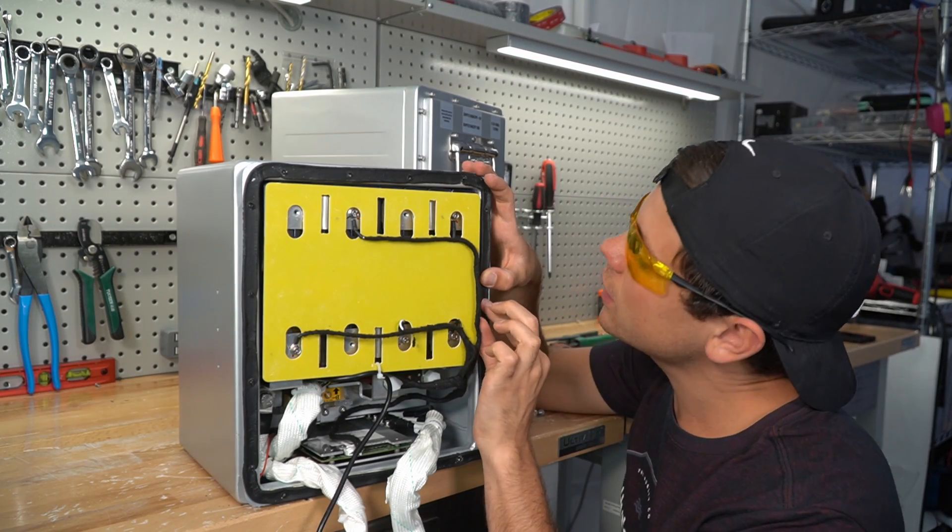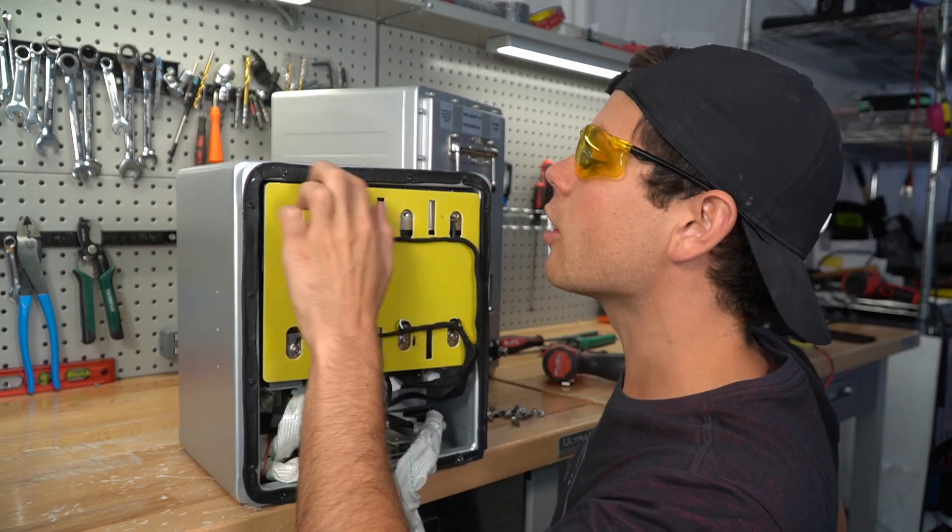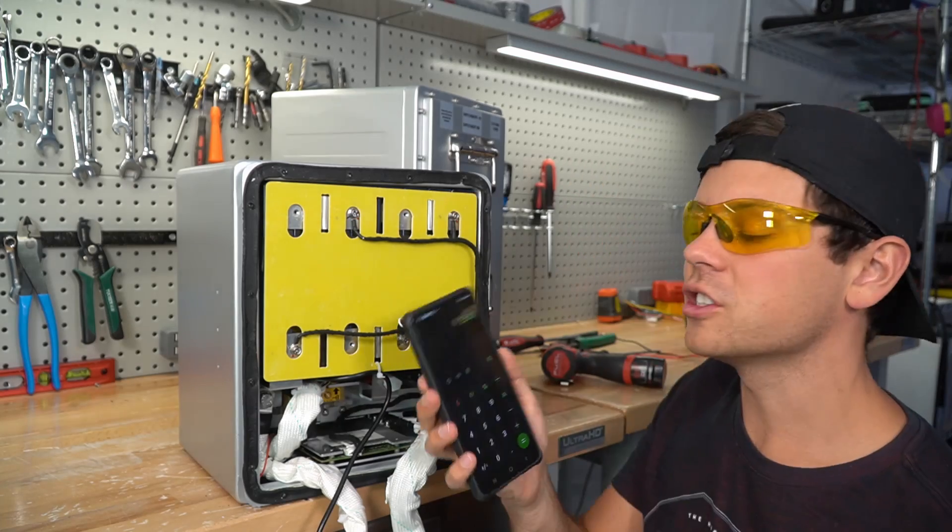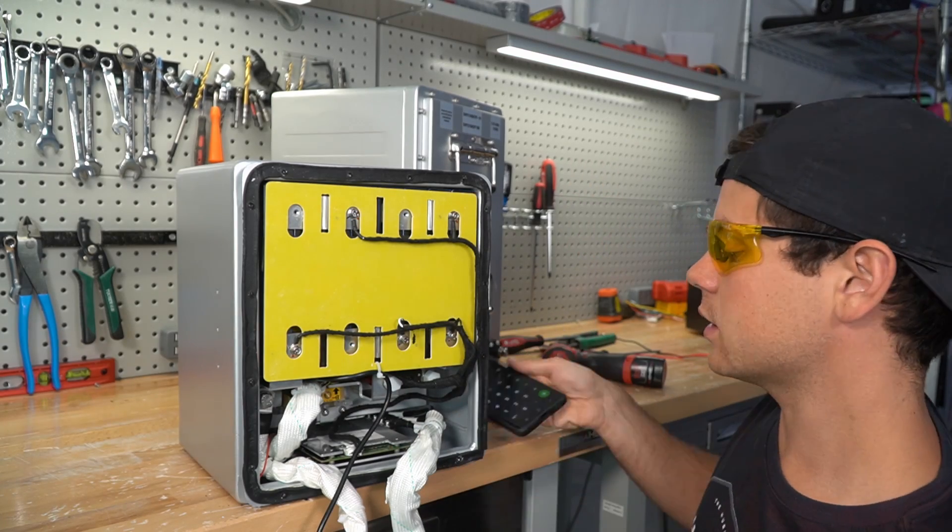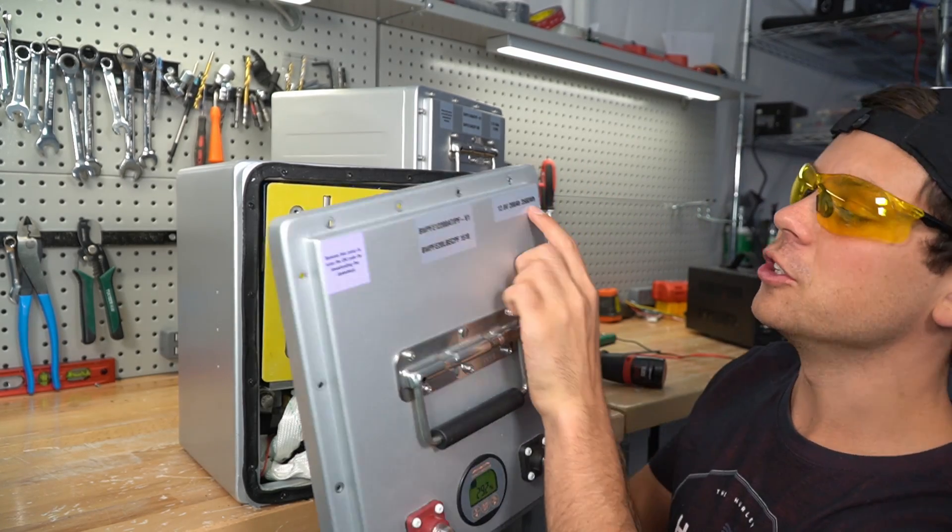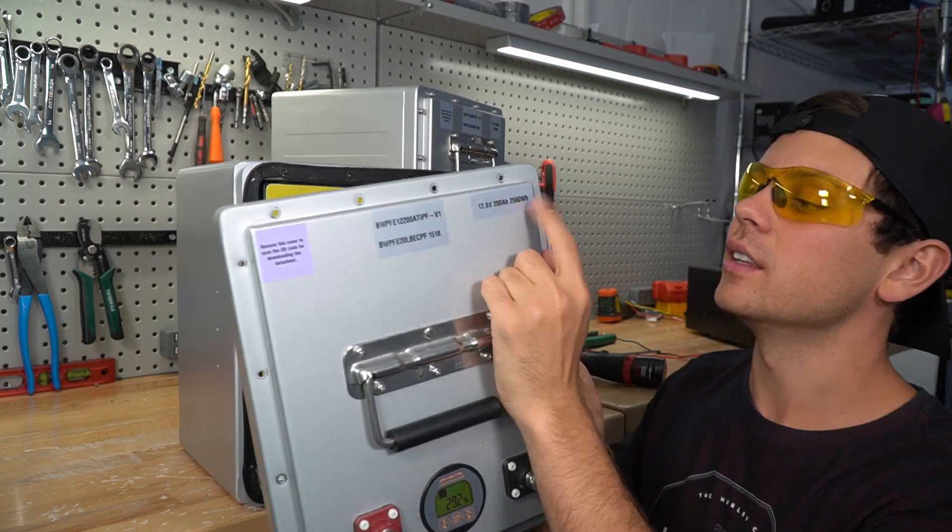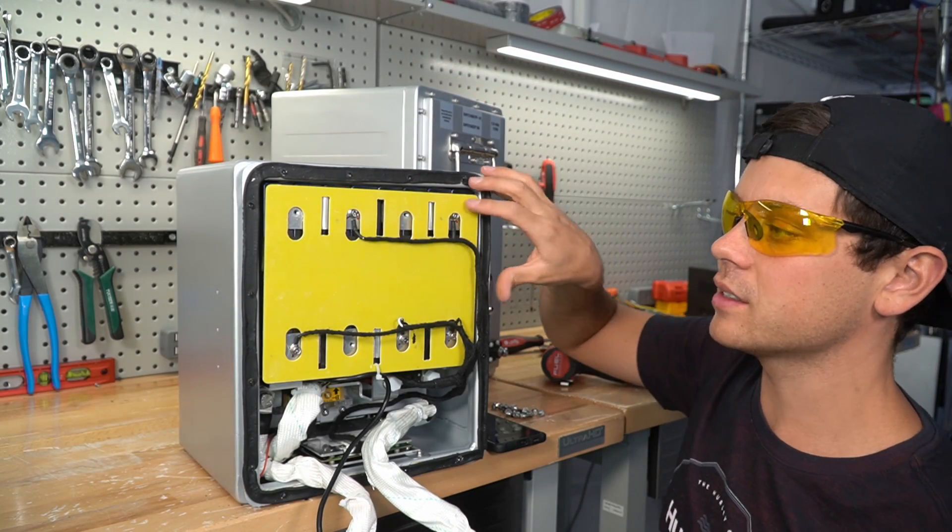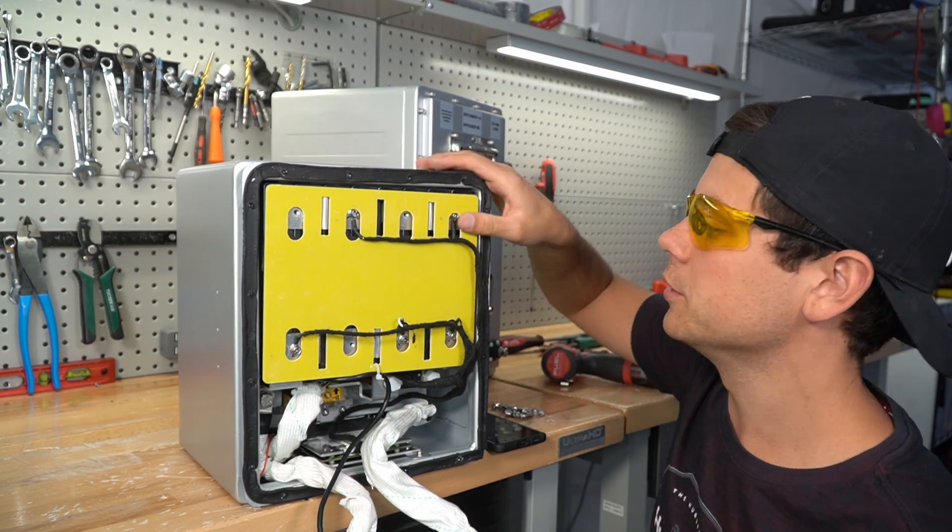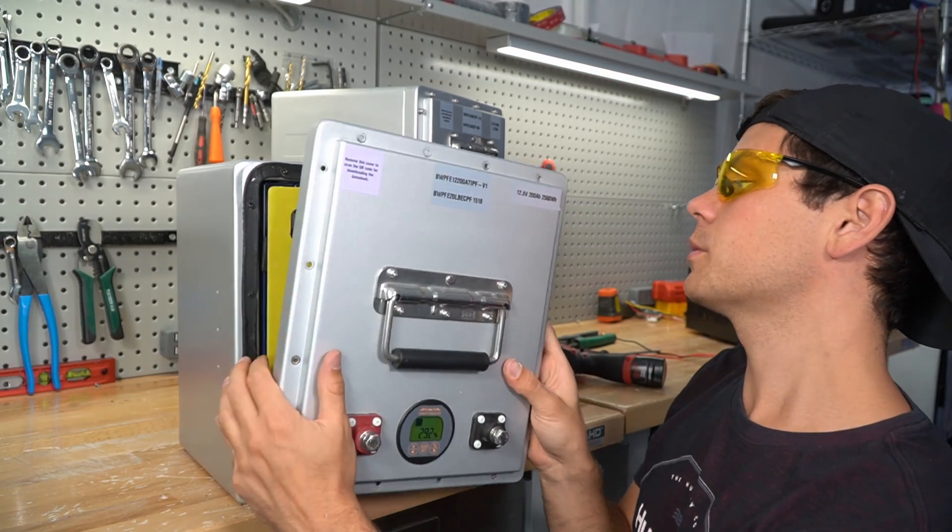And these are 320 watt hour cells. And there are eight cells in total, which is 2,560. And there's 2,560 on the sticker. So this one's not derated, this one has the same capacity that's on the label. Let's put this thing back together again. That's pretty cool.